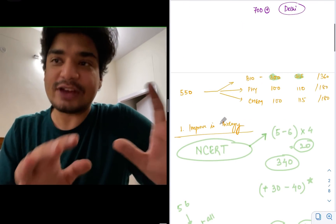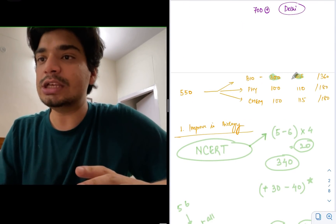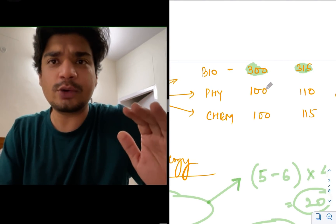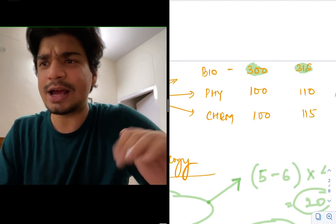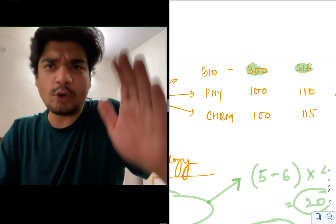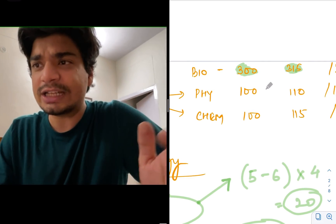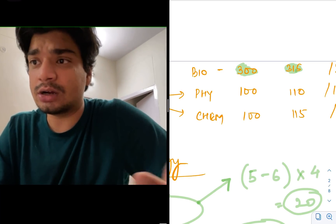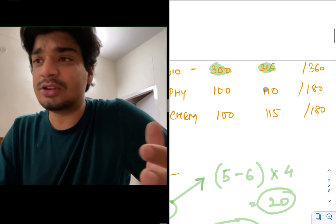For a person who has gotten 550 marks, he in biology would have gotten around 300. In 360 marks, 300 in bio. In physics 100, in chemistry 100. For someone who would have gotten 550, his bio marks would be around 310, 315. Slightly more improved marks in physics and chemistry with 110 or 115 in physics and chemistry, out of 360, 180 and 180.